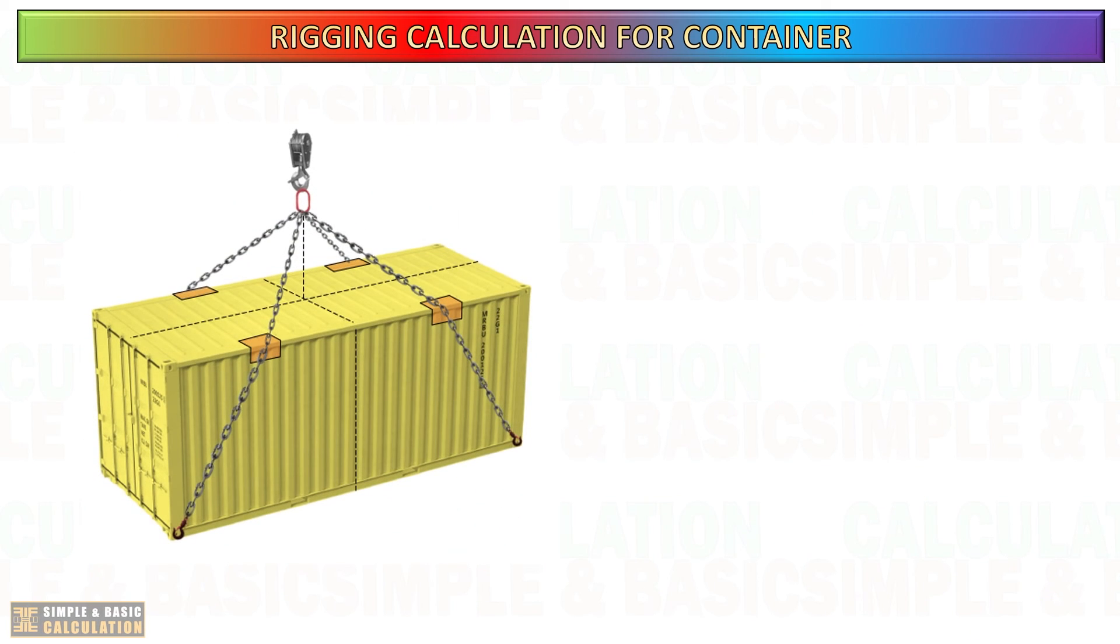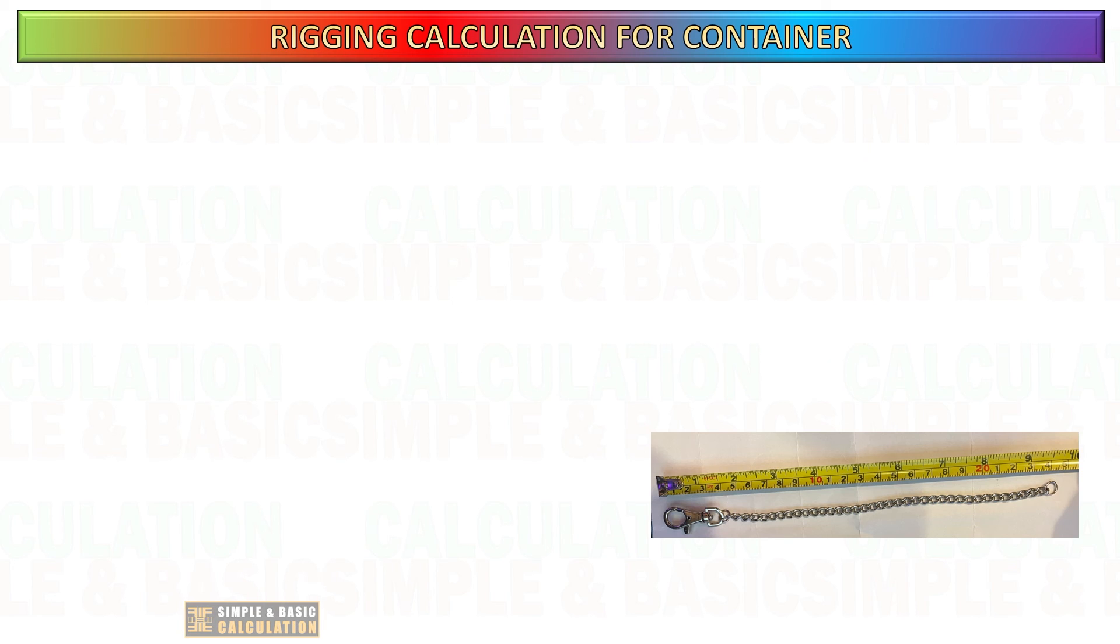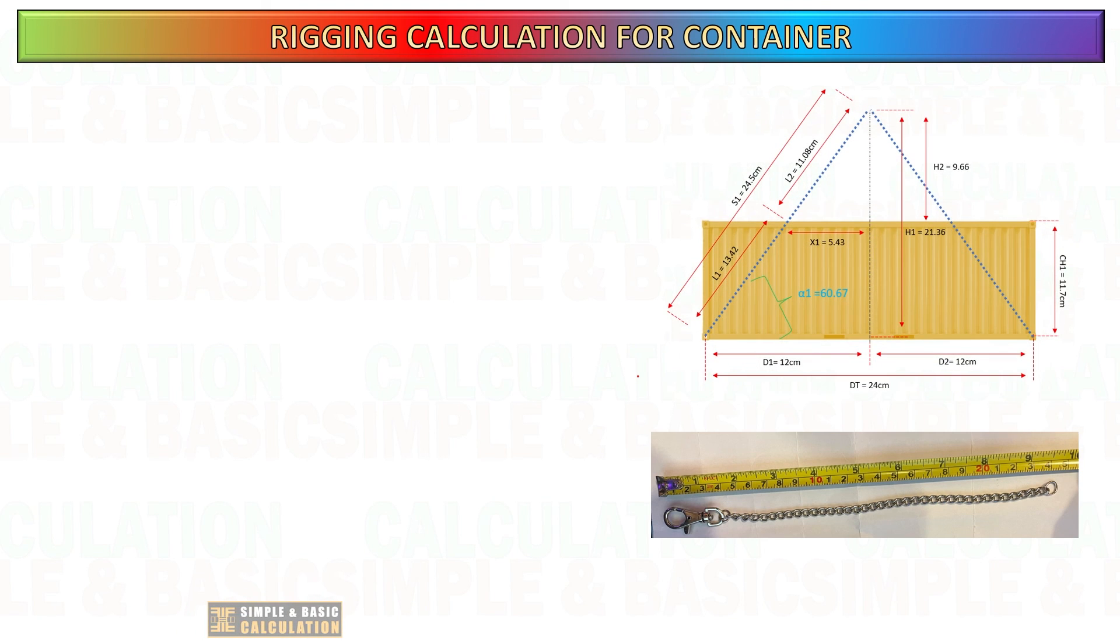Kindly be aware that we are utilizing a master link at the top to connect all four chain slings together. As the sling begins to spread out over the master link, it creates a gap or distance from the center line. This might potentially impact the angle and height of the sling. However, there may not be a significant amount of variation in the length. It is advisable to provide some additional space in the height to account for unforeseen circumstances.